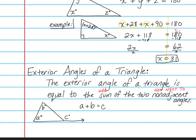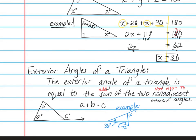I should clarify: it's the two non-adjacent interior angles. So I'll write it as A plus B equals C. In our example, we need to find x, and we're told this angle is 36 and this angle is 72. So the two non-adjacent interior angles — 36 and 72 — add to give us the exterior angle x. So x equals 108.